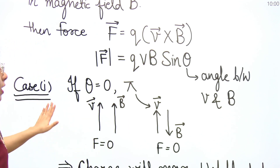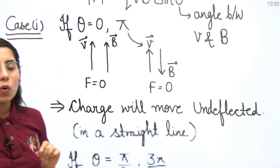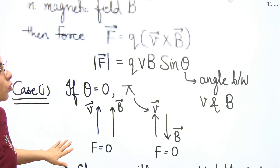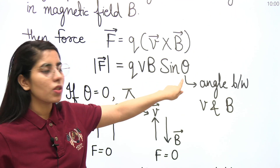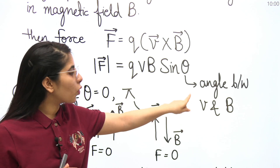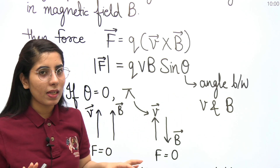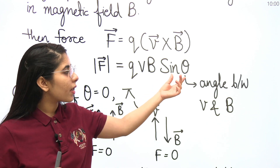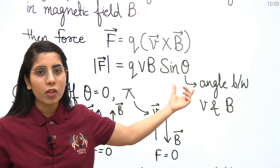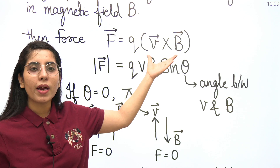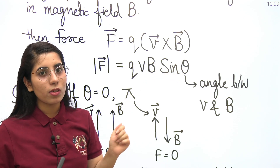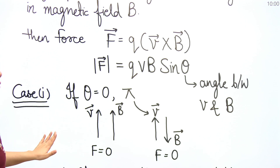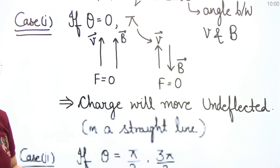Don't get confused about this theta — it is simply the angle between V and B. Sometimes students get confused about this angle but there is no such point of confusion, as we normally find the cross product of two vectors. That's what we are doing here and that's how we write the final expression for the magnitude of force.